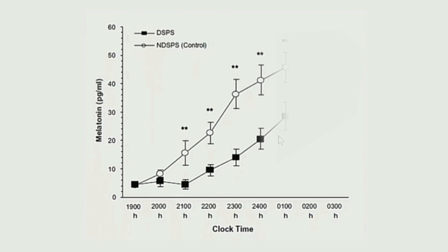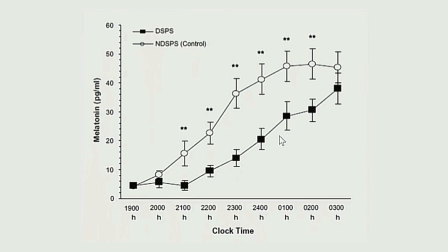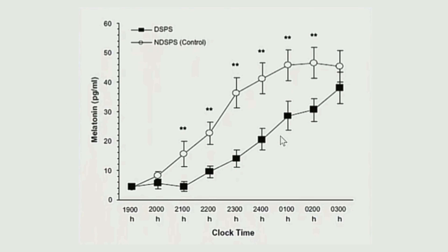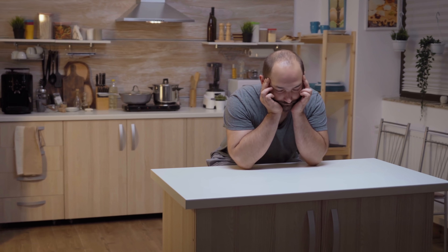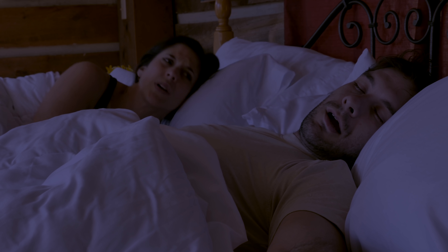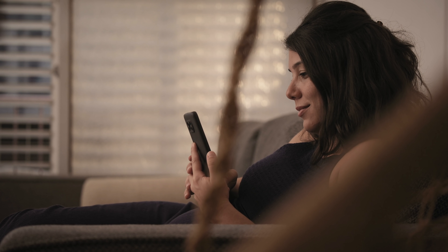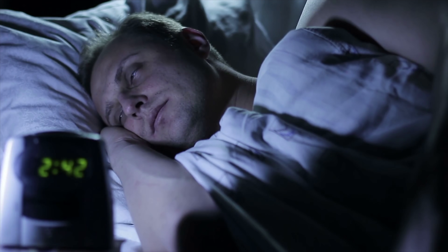Just because someone goes to bed routinely at 2 a.m. doesn't mean they automatically have delayed sleep-wake phase disorder. Half of those who look like they have delayed sleep-wake phase disorder — with a delayed phase of the onset of melatonin secretion — actually have a normal phase, but something else is driving them to go to bed later. This could include things like excessive stress or anxiety, or any other number of issues such as playing video games, watching TV, or scrolling TikTok until 2 a.m. These people may not actually have an underlying circadian rhythm problem — maybe it's insomnia or something else.